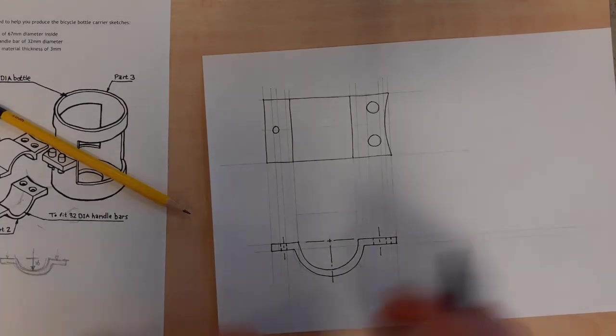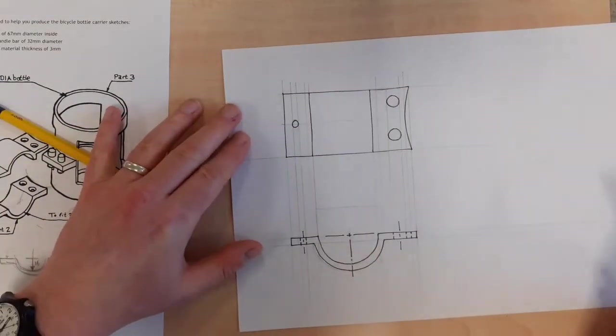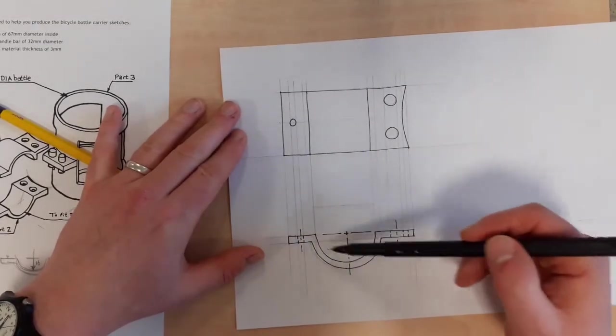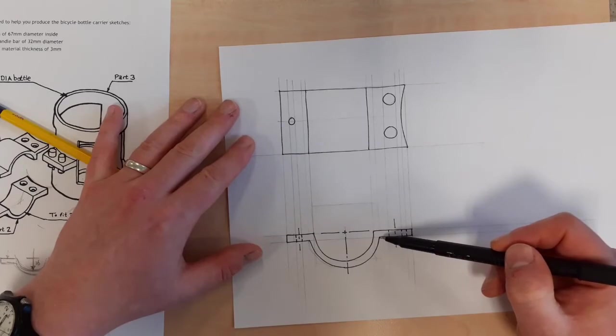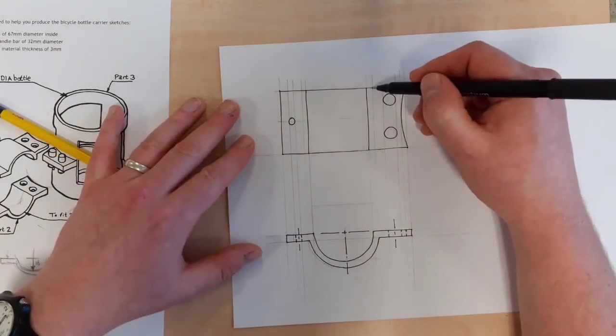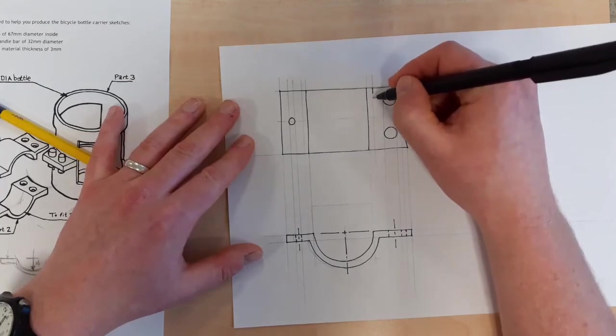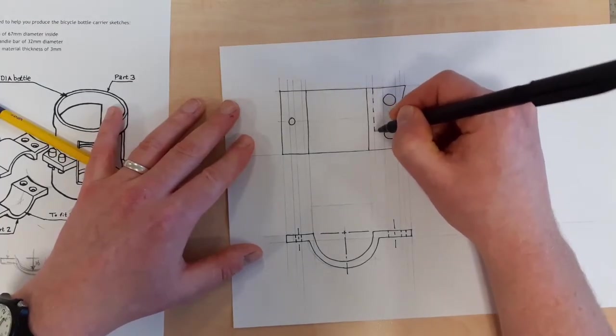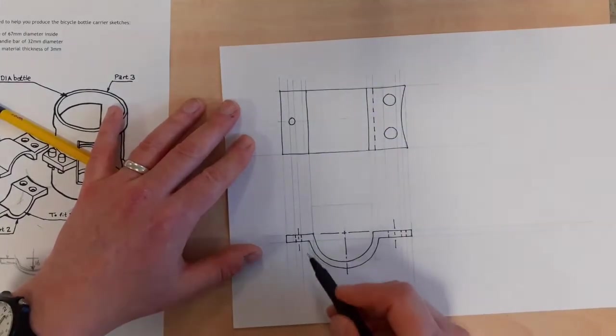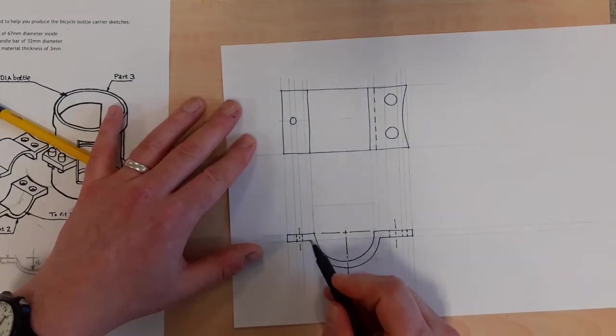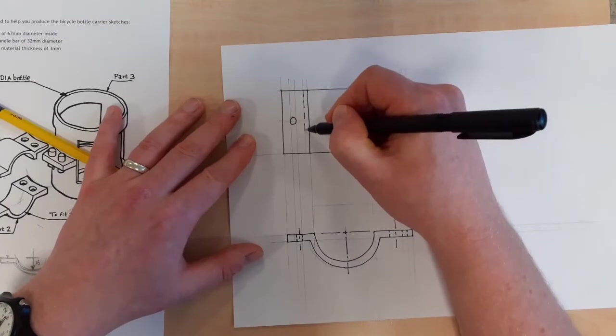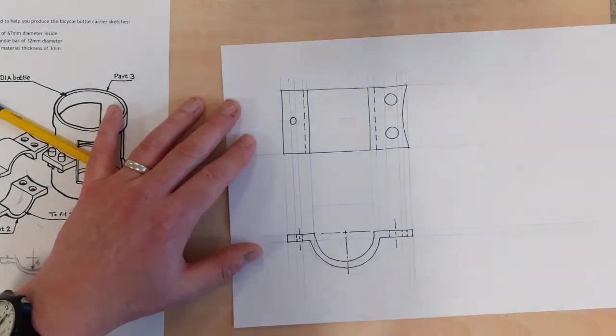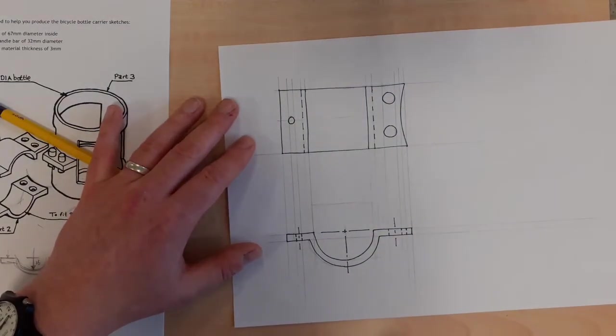Now we've got to ask ourselves what is invisible? What do we have to denote with hidden detail lines? Well, there's not much. There's this little sort of crease in here which is in the far side of the object, so I guess that should get a piece of hidden detail going across like this. The same is true over here. We've got a little crease here which is hidden from us, so that's going to go down that construction line.